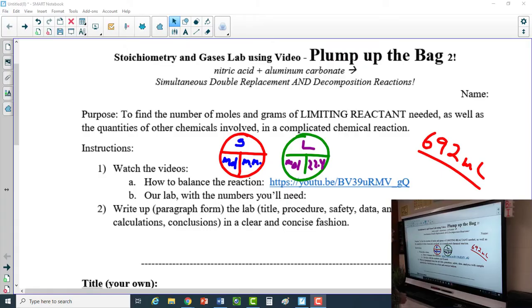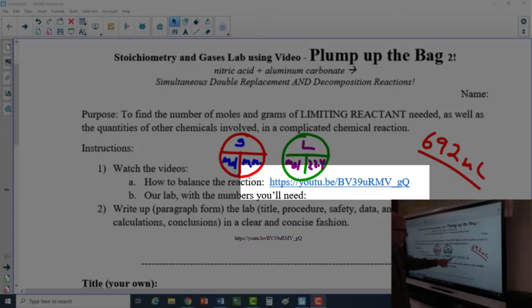We had nitric acid and aluminum carbonate. It was a simultaneous double replacement and a decomposition reaction occurring here, a little bit complicated. Balancing this reaction might present a bit of a challenge. You can go to this website, and the fellow talks through how to balance that reaction.